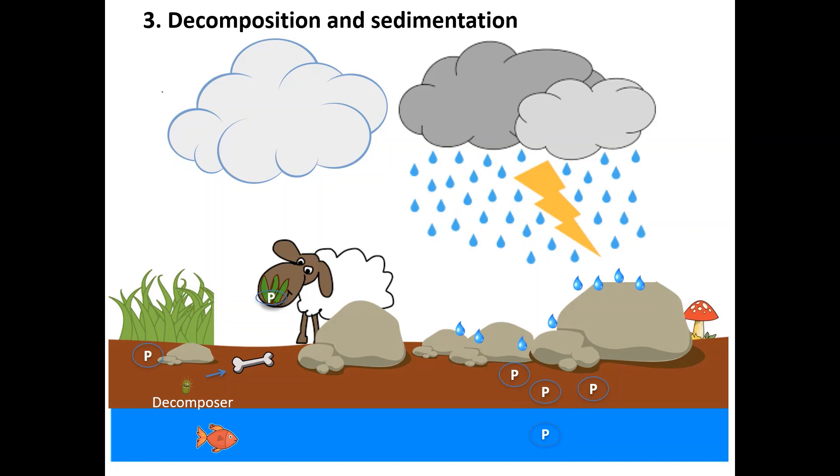Decomposers obtain phosphorus as they feed on the dead remains and phosphorus is released back to the soil. Animals also excrete phosphorus as waste product in urine.